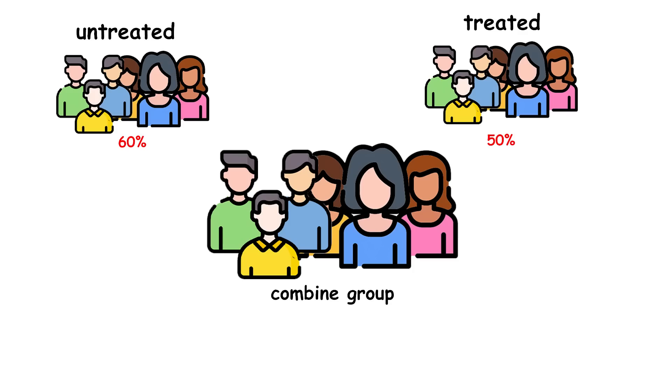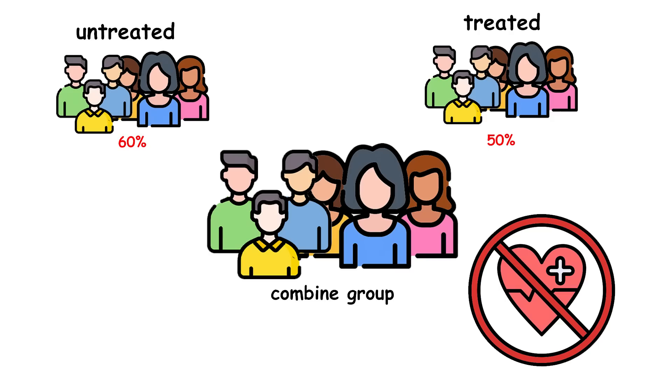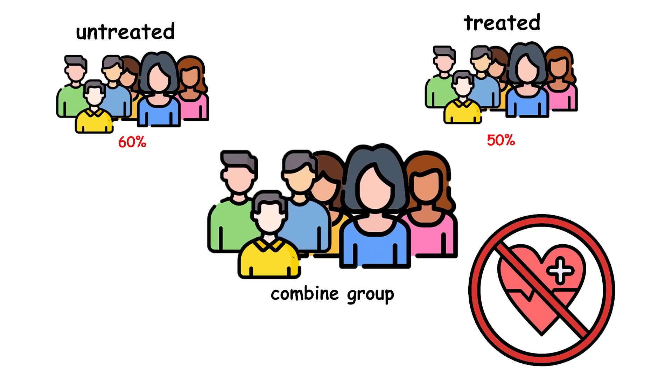Surprisingly, when you look at the combined data, it appears that the treatment is less effective or even harmful. This reversal of the trend when the groups are combined is known as Simpson's paradox.